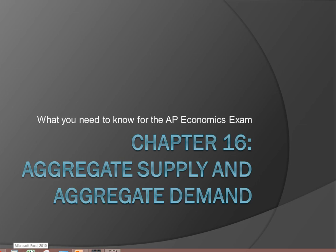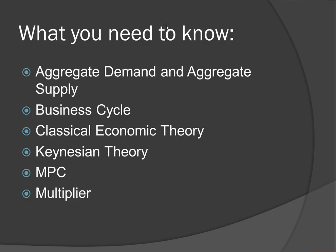Hi, my name is Dylan, and this video will be about Chapter 16 of the Barron's AP Economics book. As always, I will be covering what you need to know for the AP Economics exam. The topics covered in this chapter are essential for a good understanding of macroeconomics. These topics include aggregate demand and aggregate supply, business cycles, classical and Keynesian economic theories, MPC or marginal propensity to consume, and multipliers.